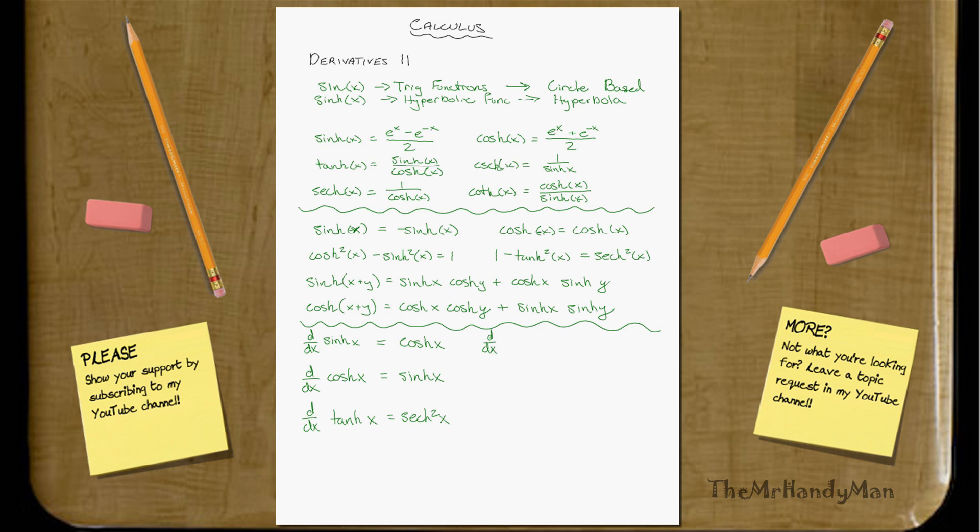d over dx of csch x, which equals negative csch x coth x.